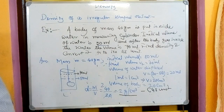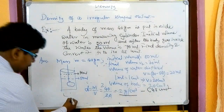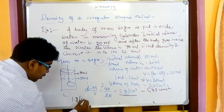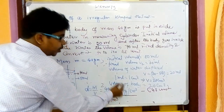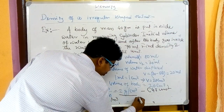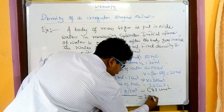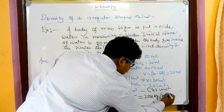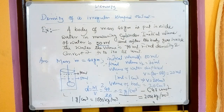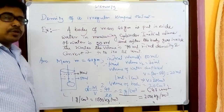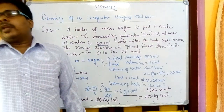We have to convert it into SI units. We know 1 gram per centimeter cube = 1000 kg per meter cube. Here it is 2 gram per centimeter cube, so the answer is 2000 kg per meter cube. That is the density of the body in SI units.